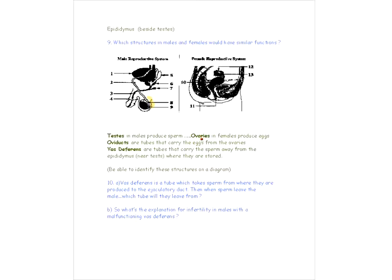Question ten says: the vas deferens is a tube which takes sperm from where they are produced to the ejaculatory duct. Then the sperm will leave the male — which tube will they leave from? They go from the vas deferens to the ejaculatory duct and then through the urethra. If someone asks about a problem with the vas deferens causing infertility, it would be because the vas deferens is not able to take the sperm to the ejaculatory duct and from there to the urethra.